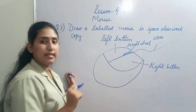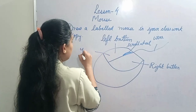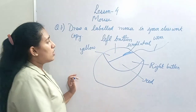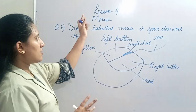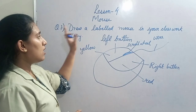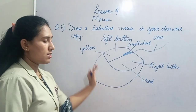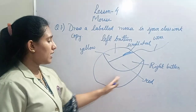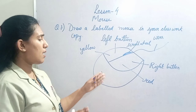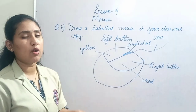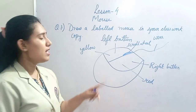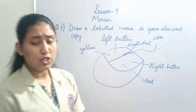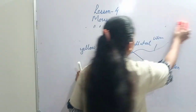You have to label four parts. Also, color the left button yellow and the right button red. Draw it like this - first write 'Lesson 4 Mouse', then write 'Question Number 1', then write 'Drawing of Mouse', and below that draw a big mouse. Label it and then color it. The remaining parts you can leave blank - it's not necessary to color everything, but I suggest you at least color the left and right buttons.